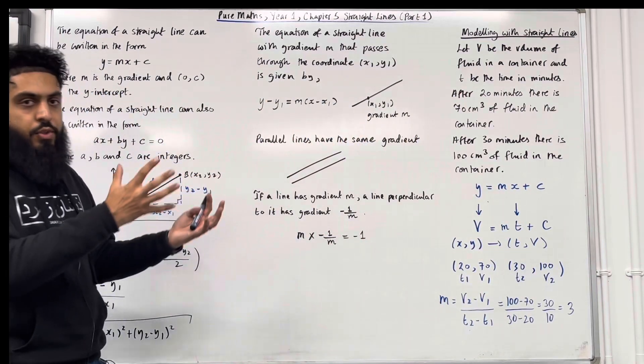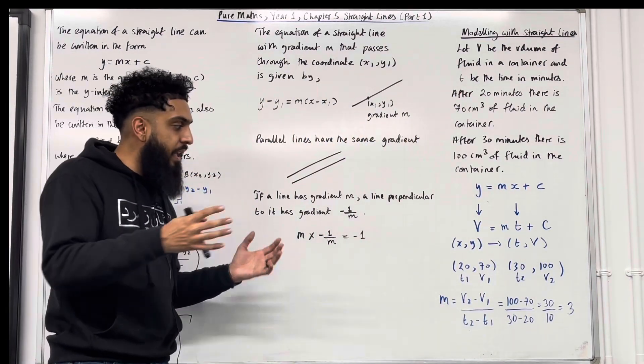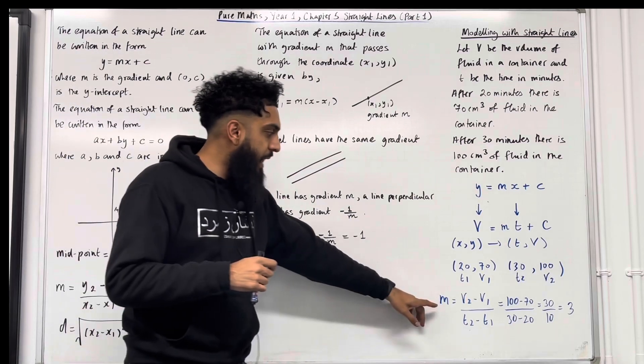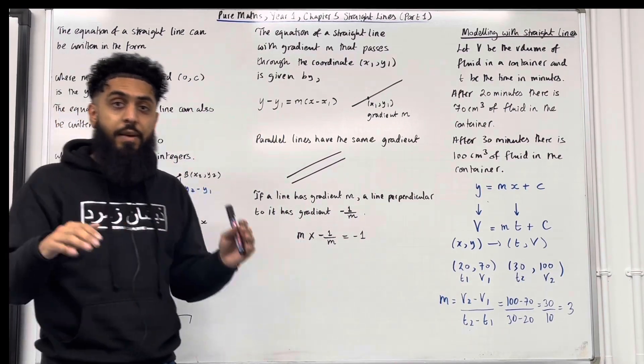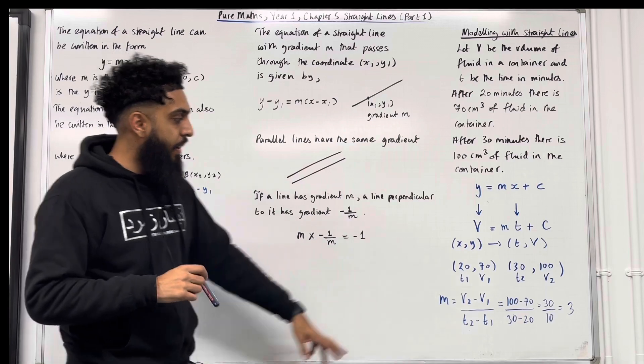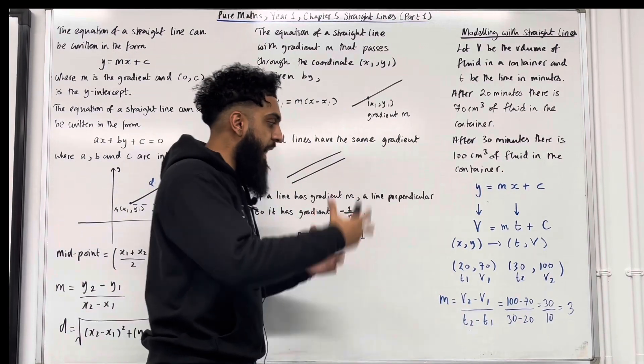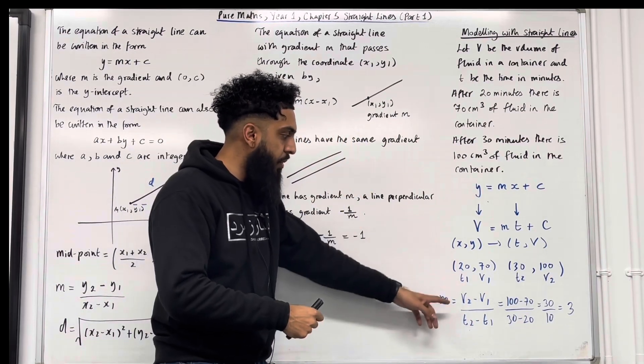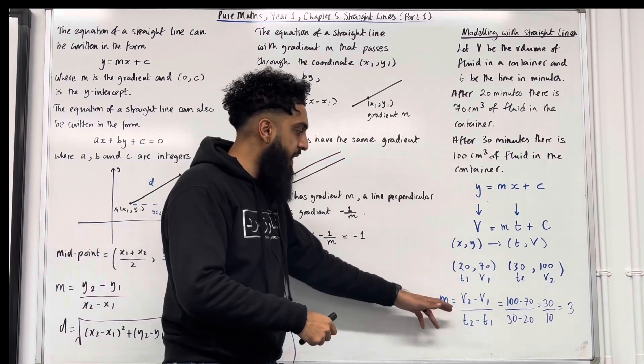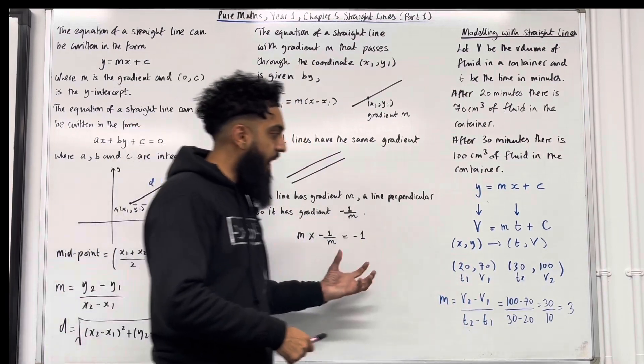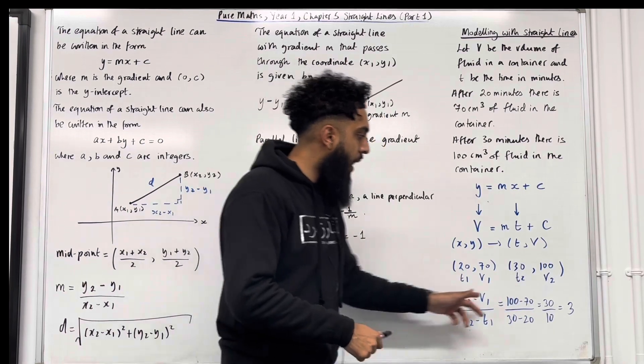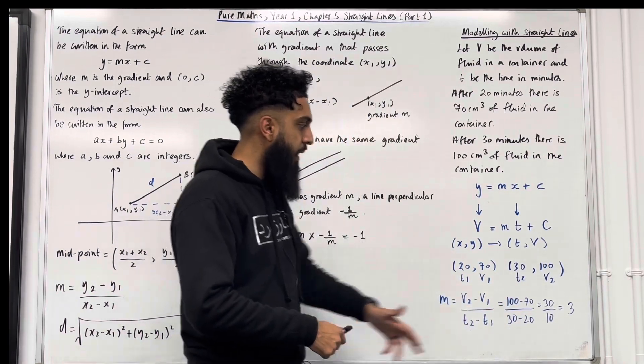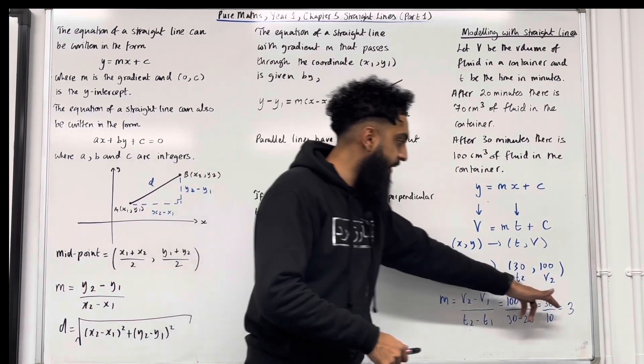Now because we've got two coordinates, we can actually calculate the gradient. The gradient m is given by originally y2 minus y1 divided by x2 minus x1. But now we modify that formula in terms of v and t. So we've got v2 minus v1 all over t2 minus t1. So if I carry out my substitution, I get 100 minus 70 over 30 minus 20. So 30 over 10, this gives me 3.